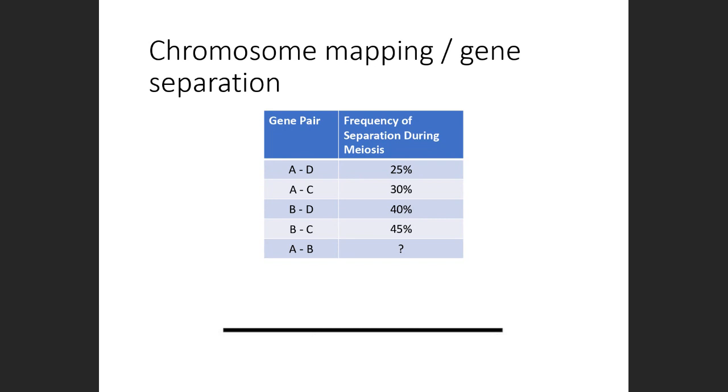In chromosome mapping, the steps are the same no matter how many genes you're asked to map. Begin by drawing a line, and this represents the chromosome along which all of these genes are going to be found. Next, look at the table and look for the longest distance or frequency of crossing over or separation between two genes. These are going to mark the outer boundaries of the map.